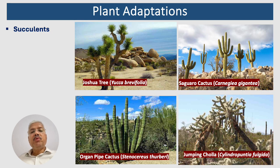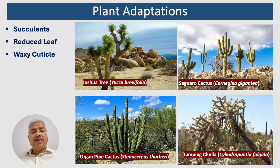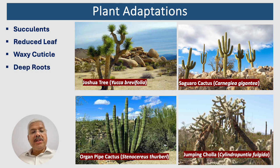Plants in desert biomes have evolved a variety of adaptations to survive in the harsh conditions of arid environments. These adaptations help them conserve water, tolerate extreme temperatures, and obtain essential nutrients. Desert plants have thick, fleshy leaves that can store water for extended periods. Some plants have small or needle-like leaves to minimize water loss through transpiration. A waxy coating on the leaves helps reduce water loss by preventing evaporation. Desert plants often have deep roots that can reach underground water sources, and some have shallow roots that spread widely to capture rainwater before it evaporates.